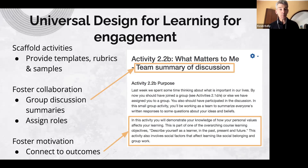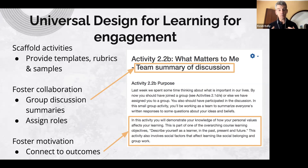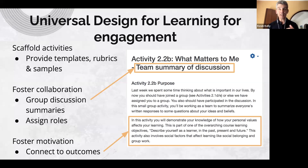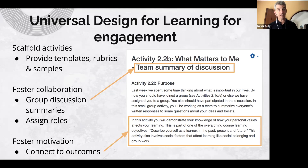Universal Design for Learning can help us make more equitable engagement strategies. We can do this by scaffolding our activities, making sure we're providing templates, rubrics, and samples. We can foster collaboration for those students who prefer to work interdependently — having students work in small groups, summarizing discussions together, sometimes assigning roles for them to participate in a discussion from a particular perspective, and making sure they understand how these activities connect to the learning outcomes.